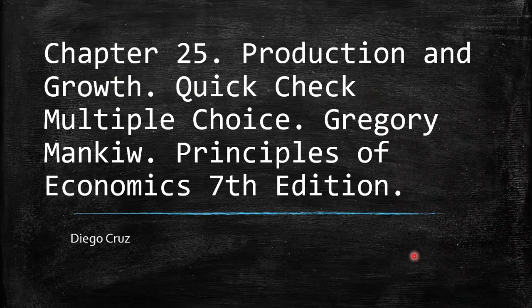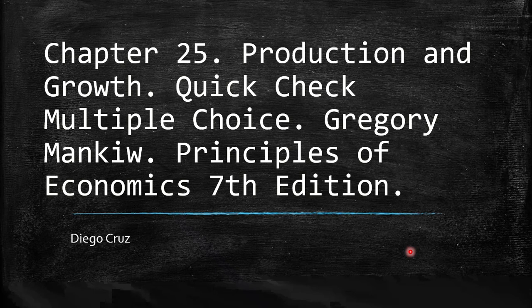Welcome to this video. We're going to discuss the quick check multiple choice of Chapter 25. The chapter is about production and growth. Remember, this is the book by Gregory Mankiw, Principles of Economics.